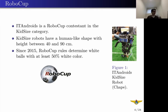For the introduction: IT Androids is the Aeronautics Institute of Technology Robotics team. It is a contestant in the RoboCup KidSize category. KidSize robots have a human-like shape with height between 40 and 90 cm. They must be completely autonomous. Since 2015, RoboCup rules determine a ball with at least 50% white color. This regulation made our previous algorithms inefficient because they could not differentiate white objects properly.